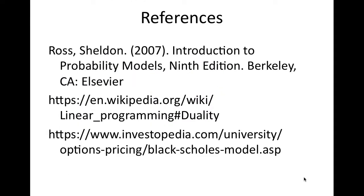That's the end. References include the textbook by Sheldon Ross as the main framework, a Wikipedia article on linear programming and duality which was very helpful for understanding the proof of the Arbitrage Theorem, and an Investopedia article on the Black-Scholes model for better understanding that formula. Thanks very much — I hope you found this interesting.